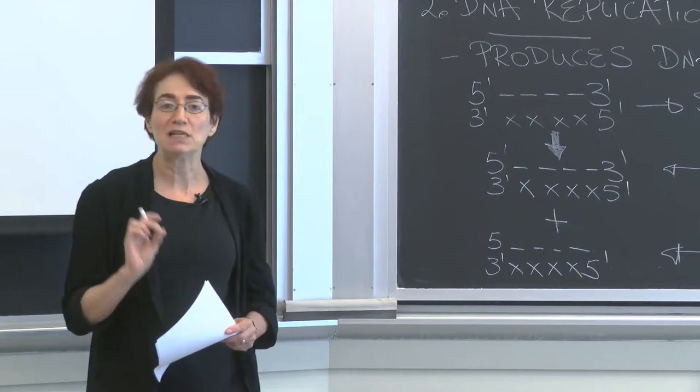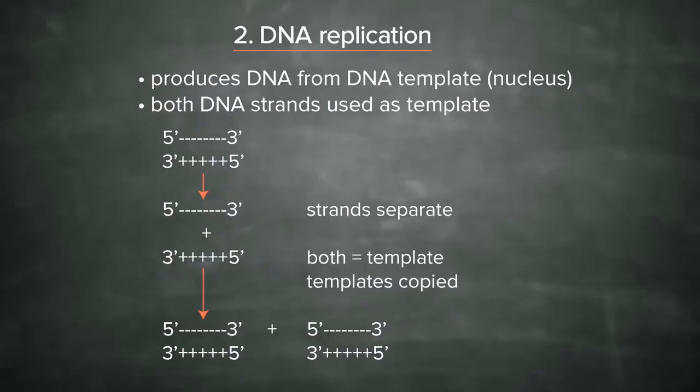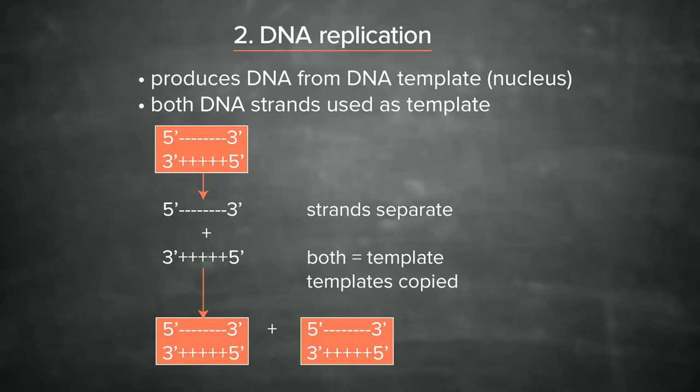The process is absolutely dependent on base pairing. Without base pairing, you wouldn't know which the right strand was. It would be a mess, but because of base pairing, because of complementarity, you can take the two strands, fill them in, and come up with DNA that is identical to the parent. So here is your parent DNA, and here is your new DNA, and they are identical.